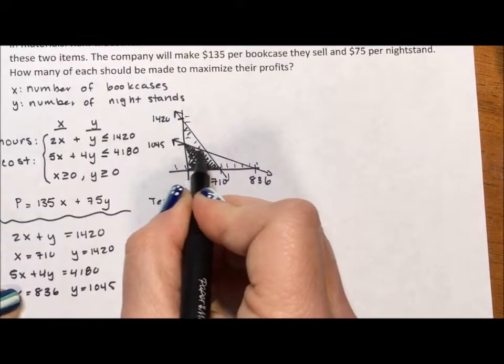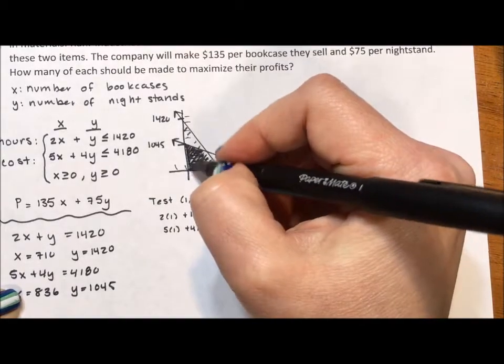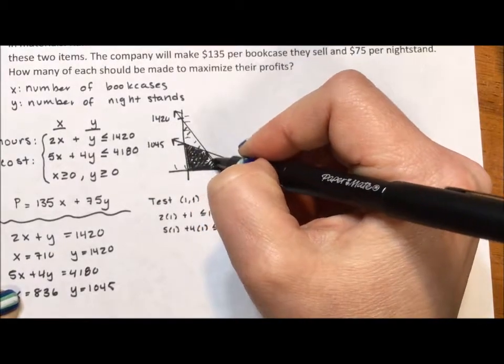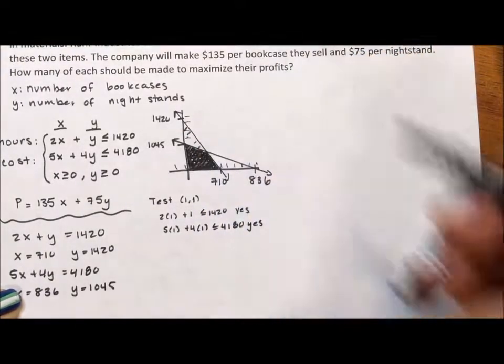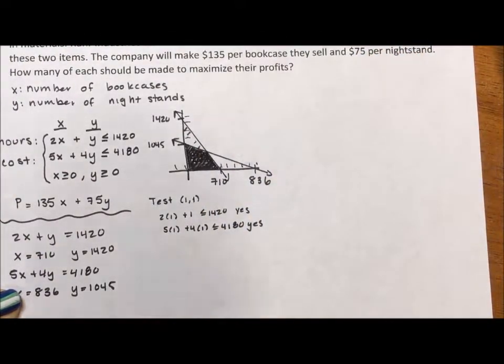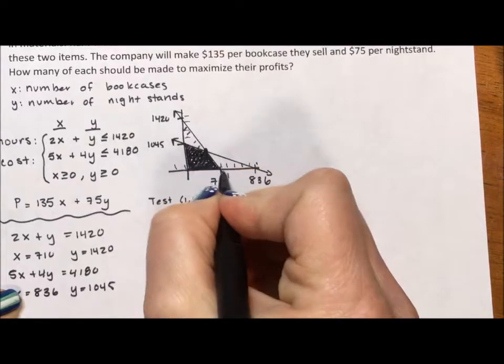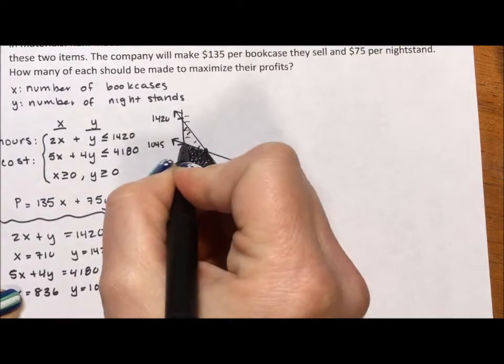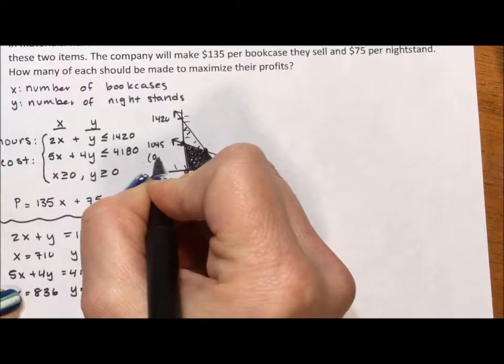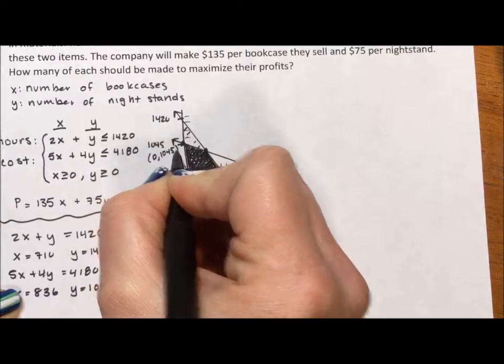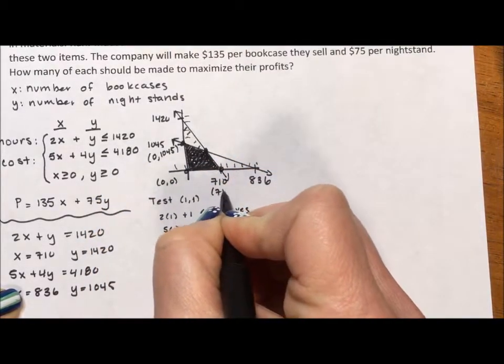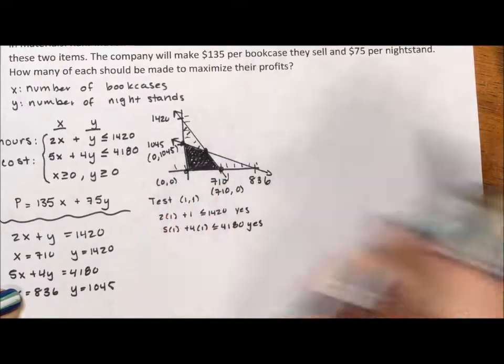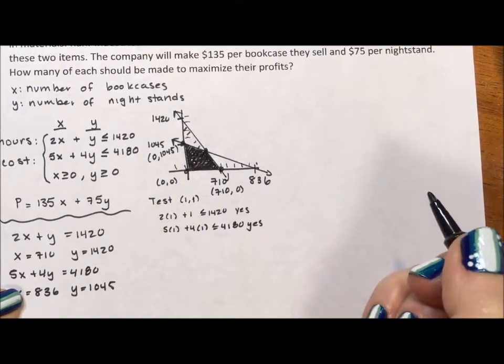I'm going to end up shading in this four-sided figure right here. And though this four-sided figure has an infinite number of points, finite number of bookcases and nightstands, but an infinite number of points, there are four corners to this shaded region. The first is (0, 1045). The second is (0, 0). The third is (710, 0). And the last I have to do a little bit of work to figure out.